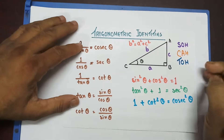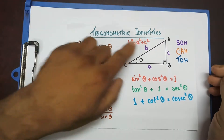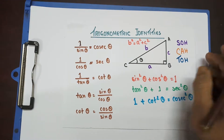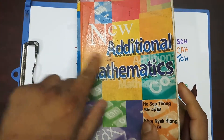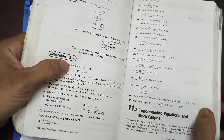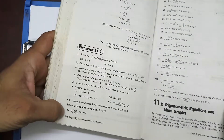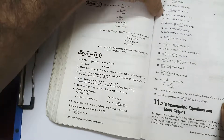Good morning students. Welcome to the second video on proving trigonometric identities. In my last video I was solving questions from New Additional Mathematics exercise 11.1. In the last video I proved from question number 1 to question number 12, and today I'm going to start from question number 13.